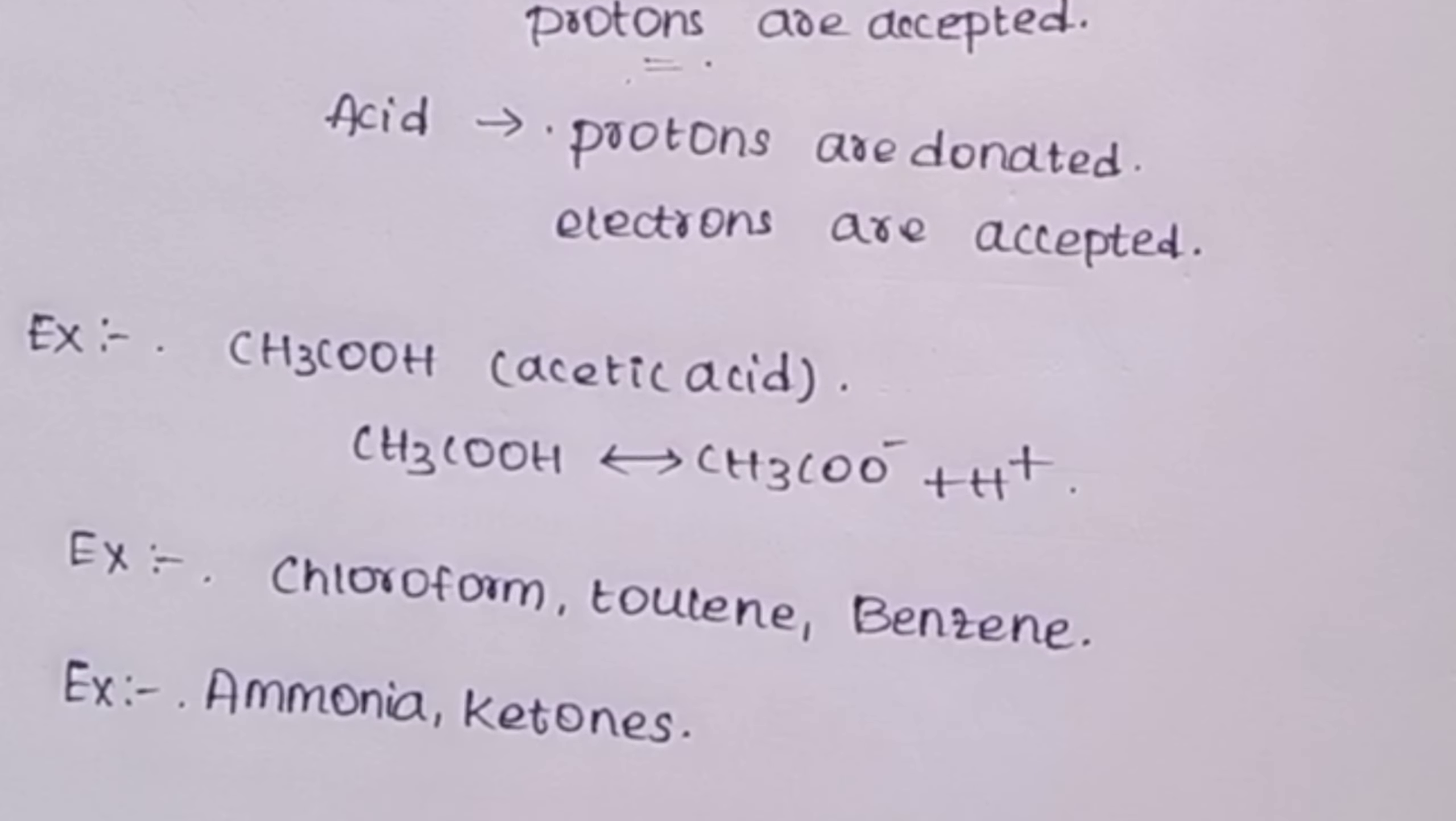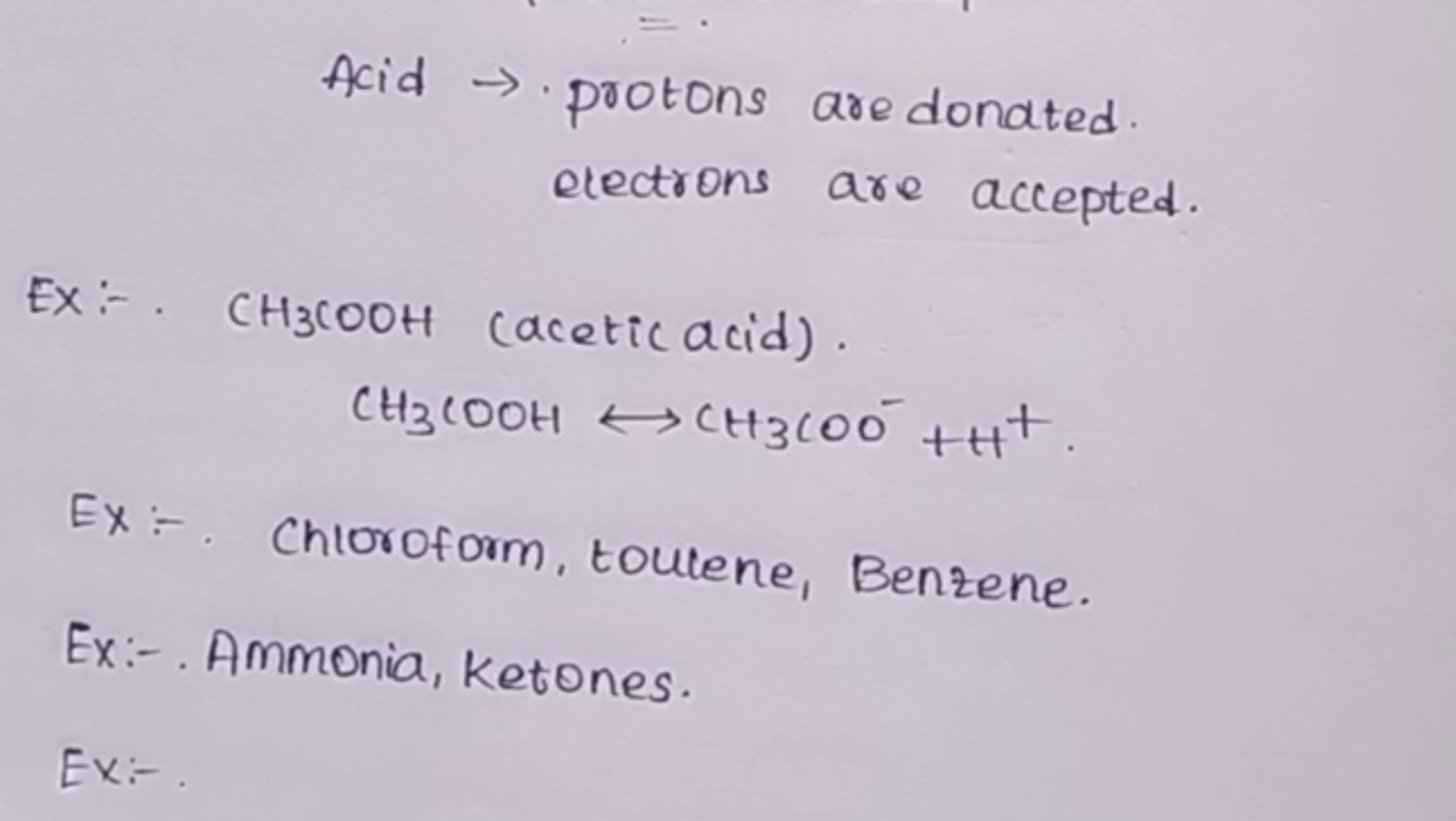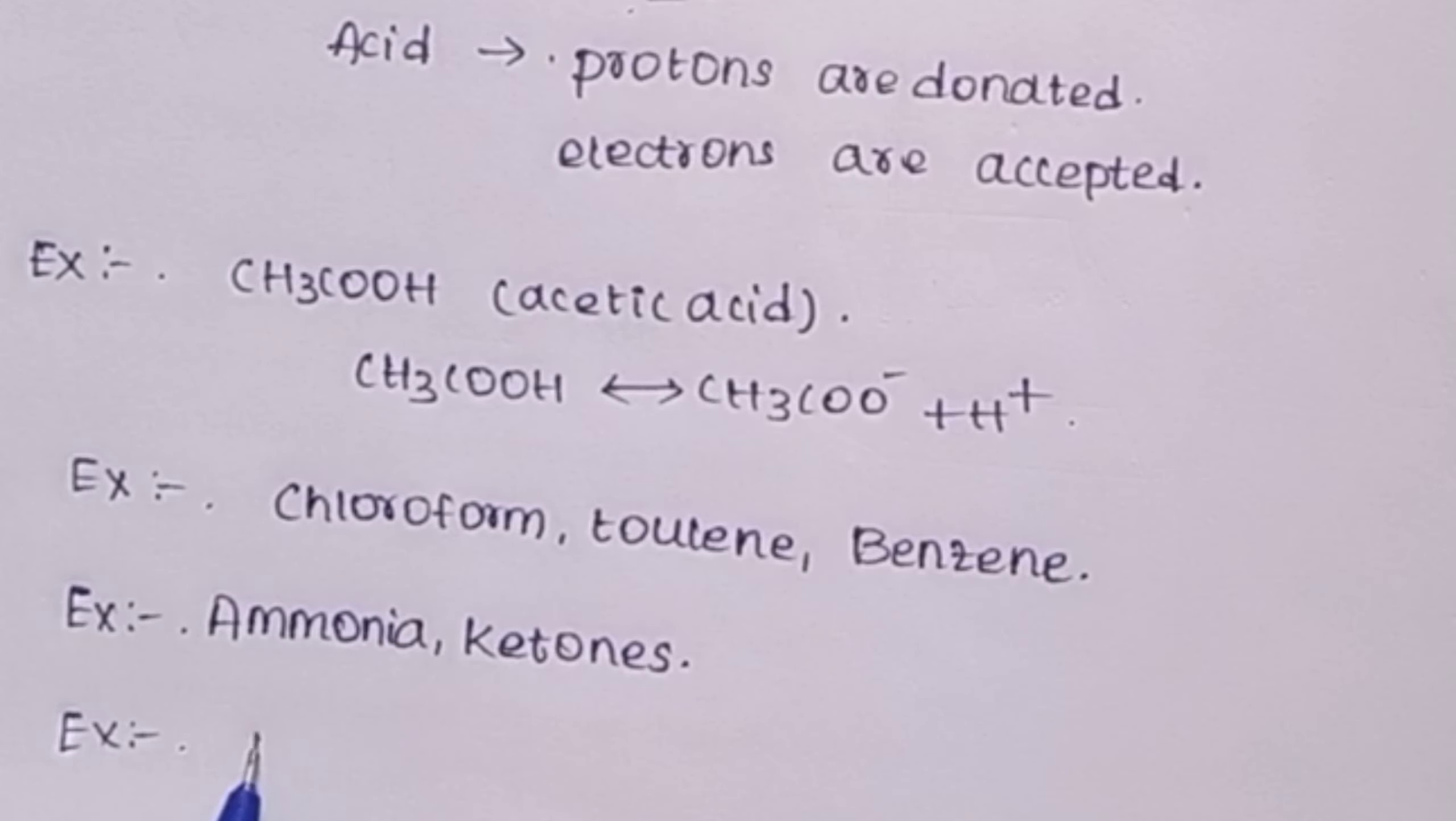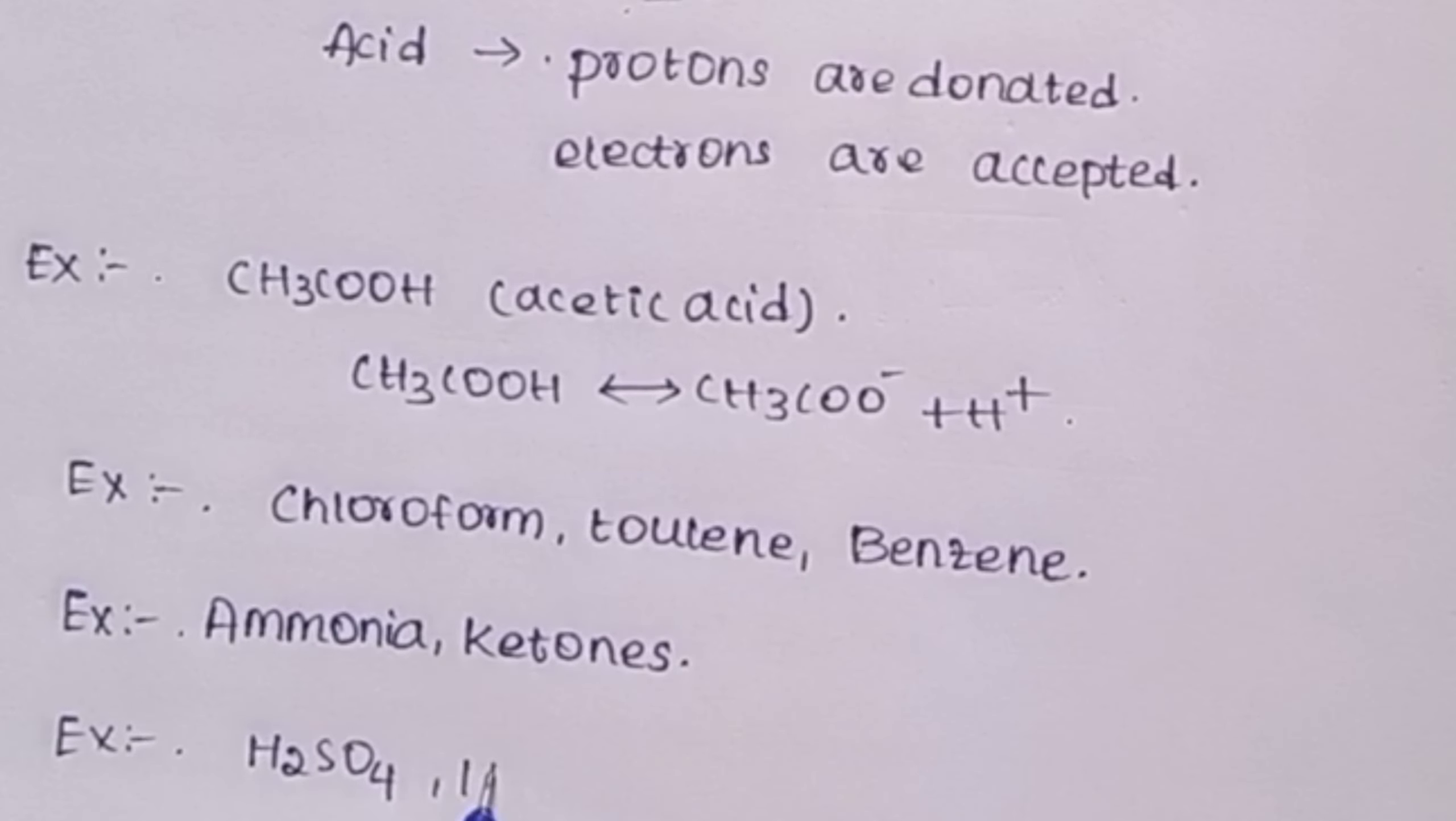Next, the examples of protophilic. Protophilic means base, so basic examples such as ammonia and ketones. Next, what is protogenic? Protogenic means protons are donated. What are the examples of protogenic solvents? Protogenic solvents include sulfuric acid H2SO4 and hydrogen fluoride.